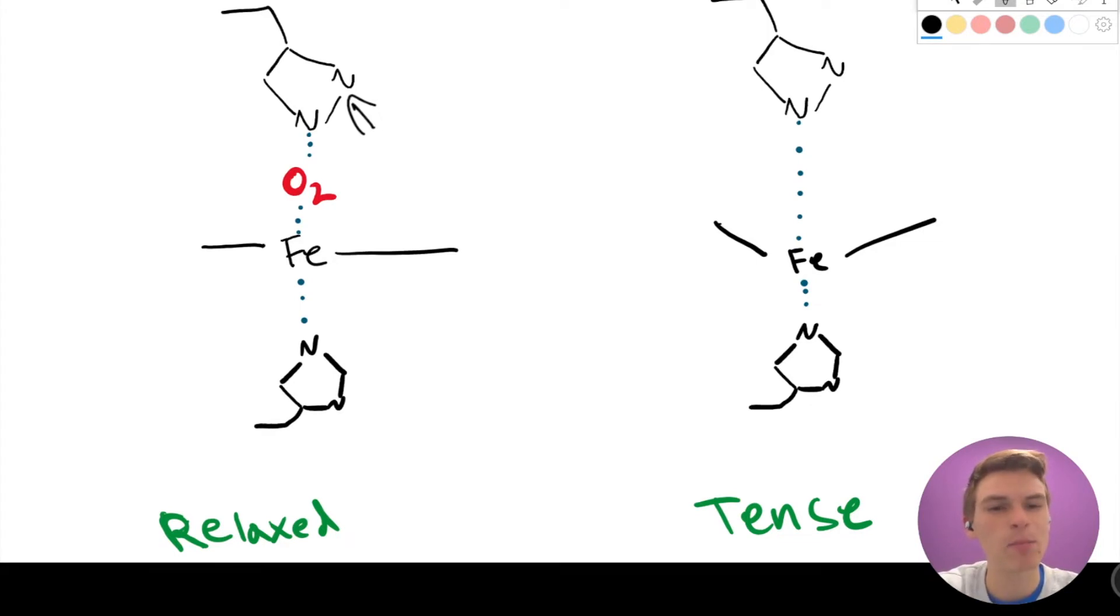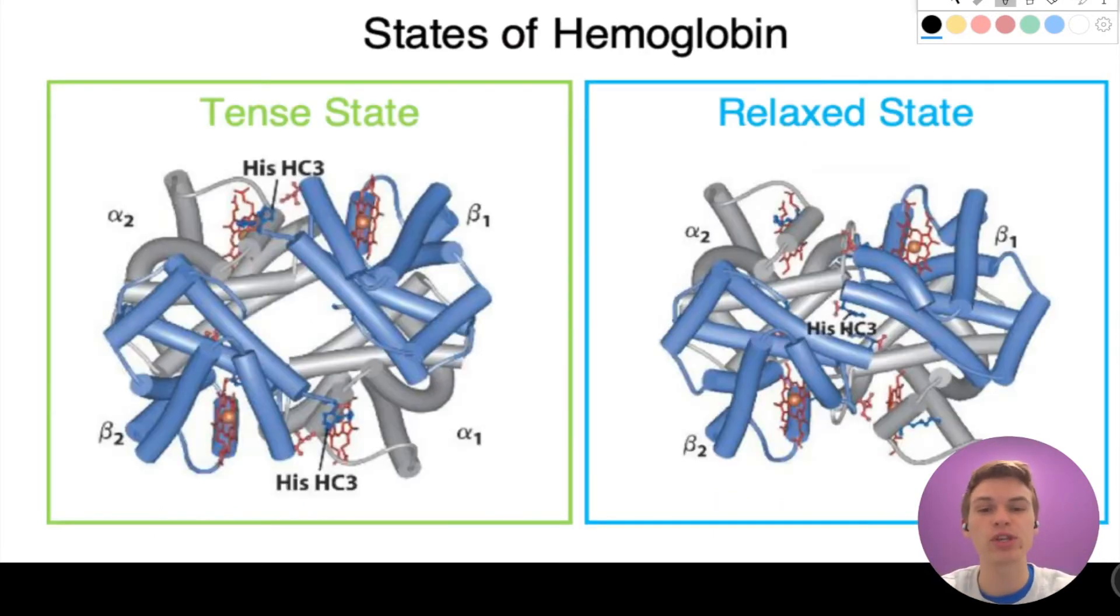So when this proximal histidine pulls the iron into this tense state, it actually causes an overall conformational shift. So not just this one little part of the protein shifts, all four subunits shift. And so we can see there's actually a distinct conformation between tense and relaxed in the quaternary structure of hemoglobin. In the tense state, we have this nice open circle in the middle, and in the relaxed state, it's really small.